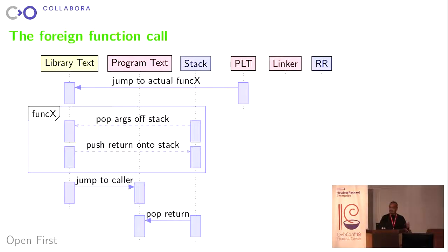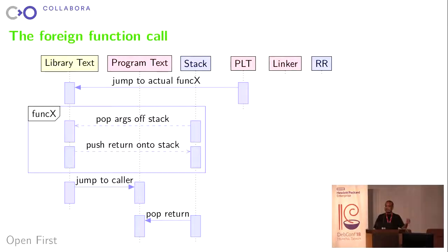The function pulls arguments off the stack, does whatever the function is trying to do, pushes the return value, we return to the caller, and pop the return value off the stack. Importantly, although the arguments and return value layout matters, none of the intervening code knows or cares what the signature of the function looks like. All the intervening steps just need an address to jump to.